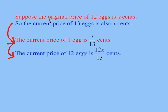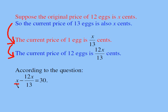According to the question, the original price of 12 eggs is the same as the current price of 13 eggs, and because of this discount, you save 30 cents for a dozen eggs. So the equation is: x minus 12x over 13 equals 30. This is the usual price of 12 eggs minus the current price of 12 eggs. All we need to do now is solve it.